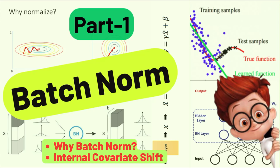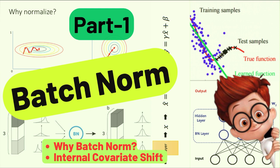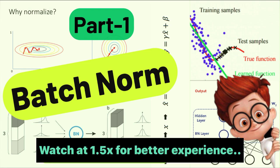Hello guys, welcome back to my channel. Today we will discuss one of the most important topics in deep learning called batch normalization. Batch normalization has become a game changer in the field of deep learning — it is a technique that has transformed the way we train neural networks. The training of neural networks has become more efficient, stable, and powerful after batch normalization was introduced. It is one of the most commonly used layers in every neural network we build nowadays.